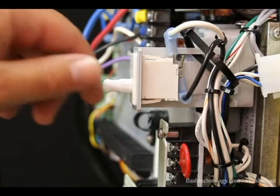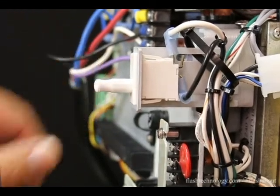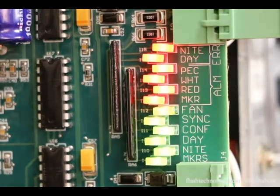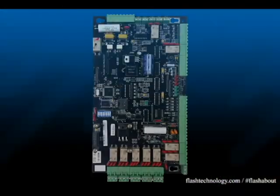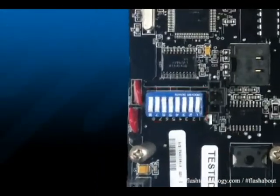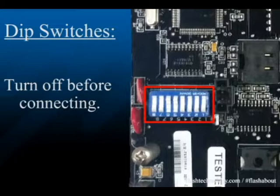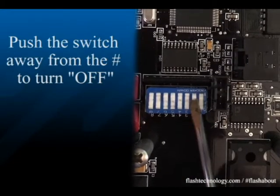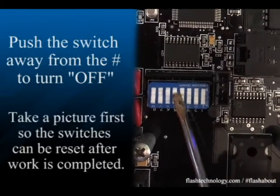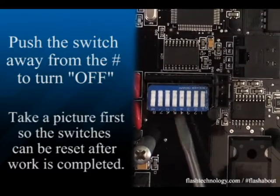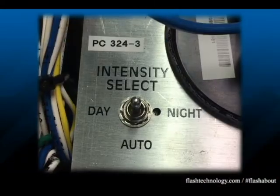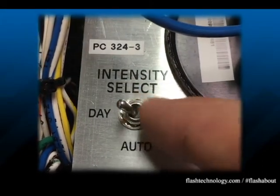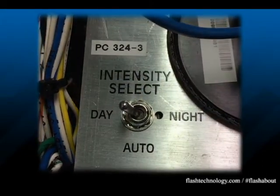Before proceeding, make sure the power converter is powered on and that the LEDs are active on the timing and trigger board. Also, turn off all of the white rocker switches, also called dip switches. Lastly, ensure the unit is in manual day mode via the intensity select switch on the front of your power converter.